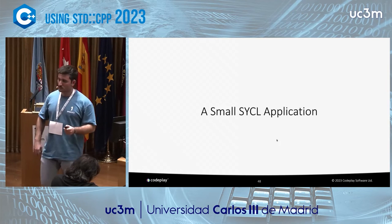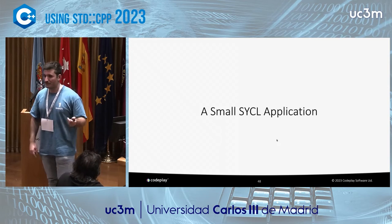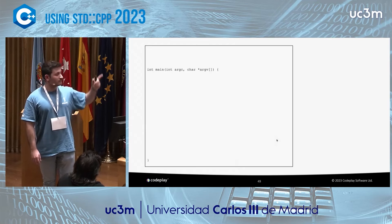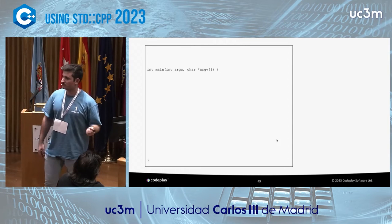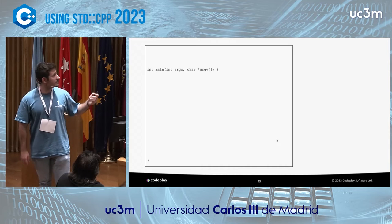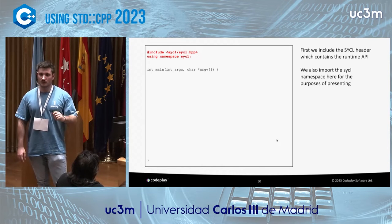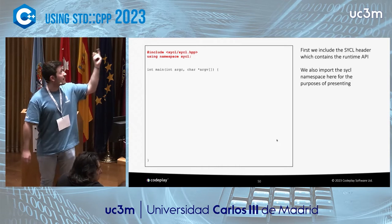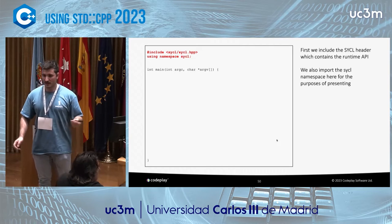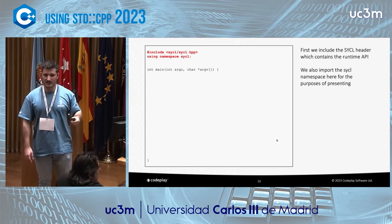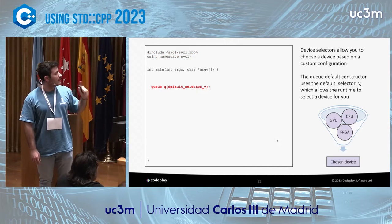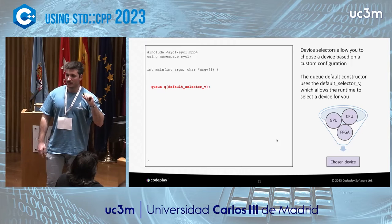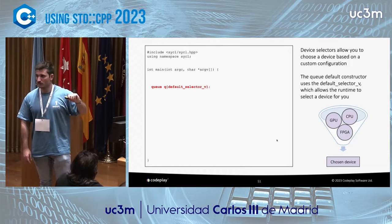Now we're going to write a small SYCL application using all these concepts. As I said, we are using standard C++, so we have a main function. To use SYCL, we include the SYCL headers. To submit work to the device, we create a queue and pass the default selector to it. A selector tells the SYCL runtime what device you want to run the code on — the default selector says: just choose a device for me.